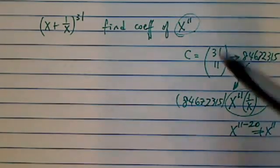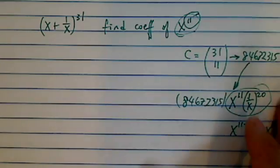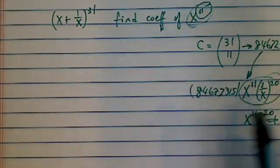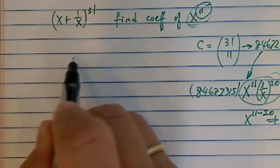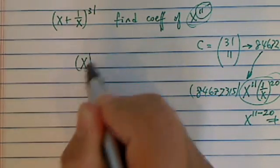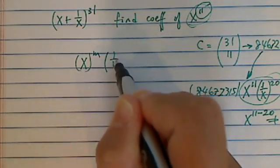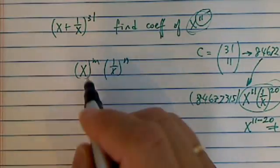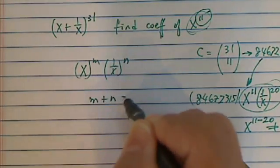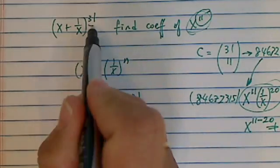So the trick is when the x to the 11th term is actually a different term than n equal to 11. So here, let's take a look. When you have x to the m, 1 over x to the n, with the binomial expansion, we know m plus n has to equal to 31. That's what we're given here.